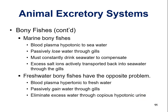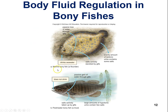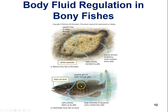Freshwater fish are always excreting to get rid of excess water. In picture form: marine bony fish have passive water loss through gills, constantly drink to compensate, must excrete excess salt via a gill mechanism, and produce only a scanty amount of urine. Freshwater bony fish have tons of water coming in, excrete large amounts of dilute urine to keep salt in, and have no need to drink since they passively take in water.